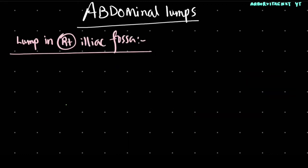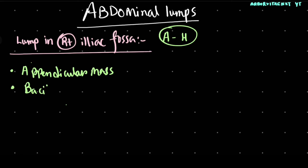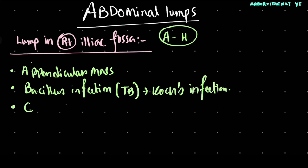We can remember them as A to H, or A4: It may be an appendicular mass, it may be a bacillus infection—that is abdominal TB or Koch's infection—it may be due to Crohn's disease or carcinoid tumor.